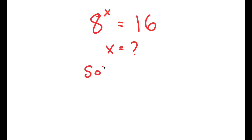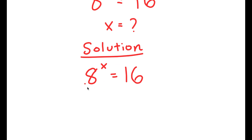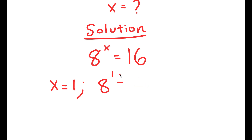For my solution, I'm going to start by rewriting my equation: 8 to the power of x is equal to 16. Before we start doing anything, let's just inspect this problem. If I plug in x equals 1, I get 8 to the power of 1 is equal to 16, which is the same thing as 8 equals 16, which is false.